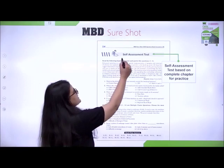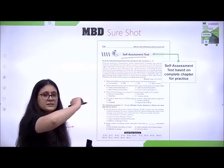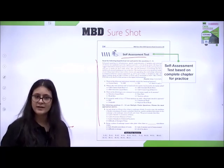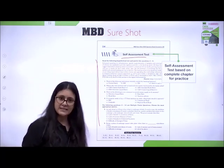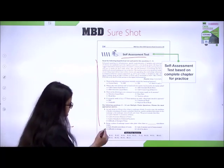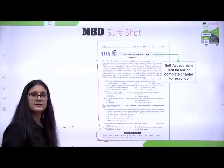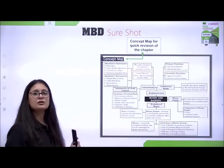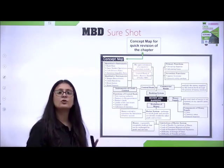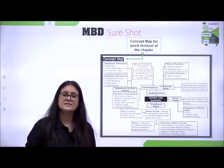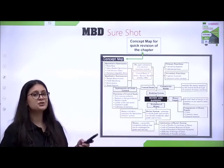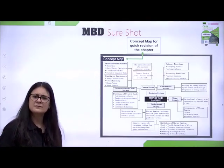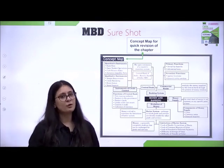This is the self-assessment test — a test of 10 to 15 questions has been given to evaluate your understanding. After taking the test, you can check your answers here as well. At the end of the chapter, there is a mind map for quick revision. The concepts and their relation to the chapter are shown in the form of a mind map for easy understanding. For some subjects, mind maps have been given topic-wise.